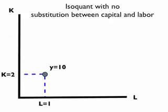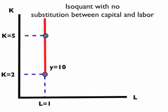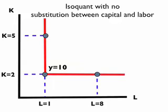Notice that we're depicting an isoquant where there is no substitution between capital and labor. This is a special case where capital and labor must be used in this proportion — two to one, two units of capital, one unit of labor — in order to produce any level of final output. If we increase the units of capital to five but retain only one unit of labor, we would still only produce ten units of output. Similarly, if we kept capital at two and increased labor to eight, we would also produce only ten units.